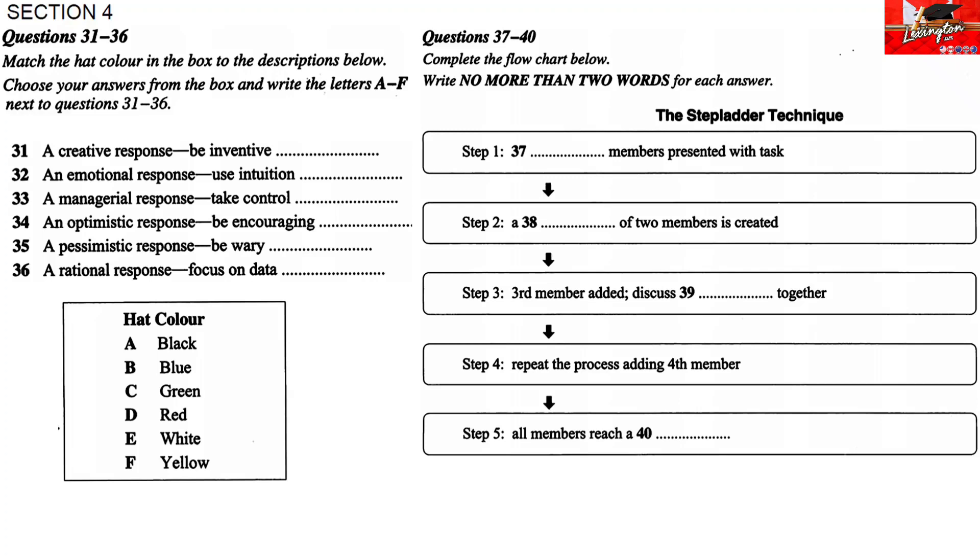In the third step, a third member is added to the core group, but, and this is most important, that third person presents his or her thoughts before having a chance to hear the proposals that have already been put forward. When all three have explained their ideas, then they can consider their options collectively.